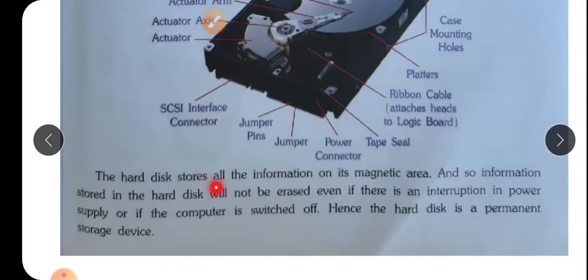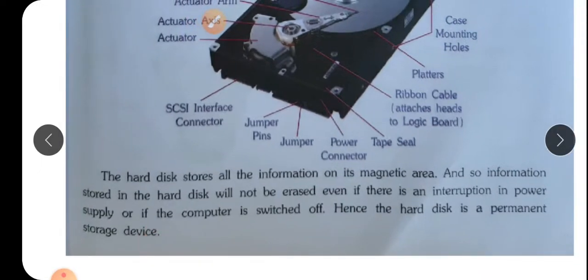The hard disk stores all the information on its magnetic area. जो भी information है वो magnetic area पे जा कर stored हो जाती है. And so information stored in the hard disk will not be erased even if there is an interruption in power supply or if the computer is switched off. इस्लिए हम बार बार save करते हैं. जब save करते हैं तो वो कहाँ चला जाता है, वो hard disk पे चला जाता है. Once the file and data is stored, you can recollect it. Hence the hard disk is the permanent storage device.